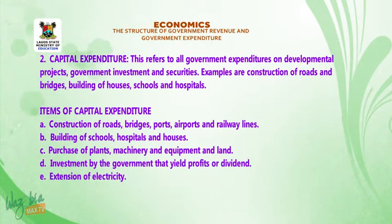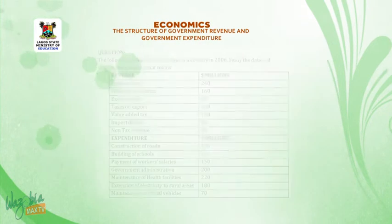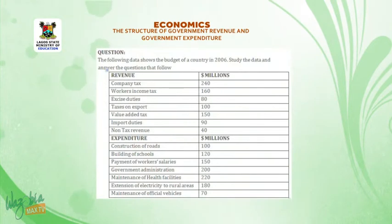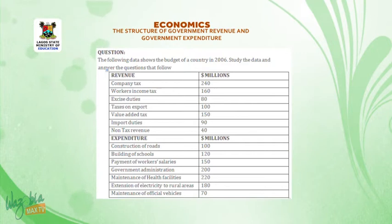We want to take a past question on this topic so you can understand it better. I'm picking a past question from WAEC 2016, Section A. The question says: the following data shows the budget of a country in 2006. Study the data and answer the questions that follow.